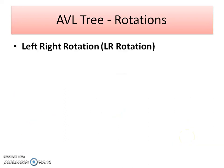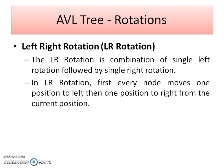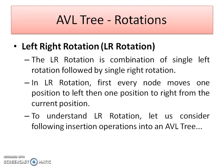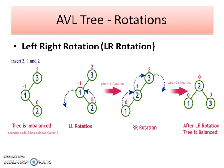Now let's move forward for the double rotation — that is left-right rotation. You can pause the video and read all the formal definition details. I would like to explain this double rotation with the help of an example. In left-right rotation, the situation is: the imbalance is at the root node, but it has a left child and the left child has only a right child. In this case, first of all we perform a single left rotation. You can see that: 2 will take the position of 1 and 1 will take the position as a left child of 2.